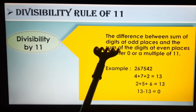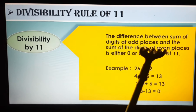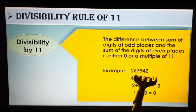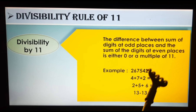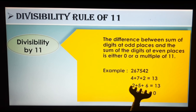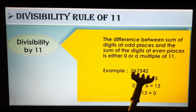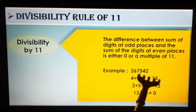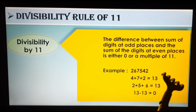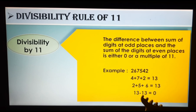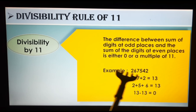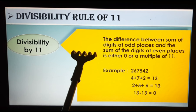Next is the Divisibility Rule of 11. The rule is: the difference between the sum of digits at odd places and the sum of digits at even places should be either zero or a multiple of 11. For example, take 267,542. Starting from the ones place: pick alternating digits — 2, 5, 6 — and add them: 2 + 5 + 6 = 13. The skipped digits are 4, 7, 2 — add them: 4 + 7 + 2 = 13. The difference is 13 − 13 = 0. Since the difference is 0, the number 267,542 is divisible by 11.